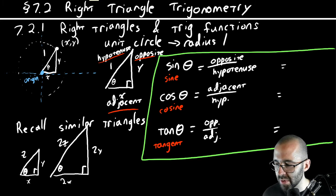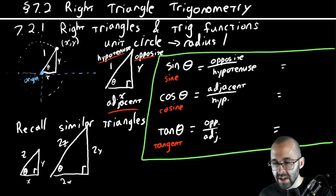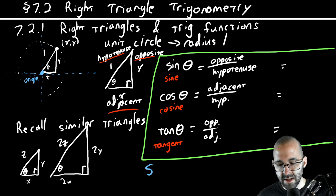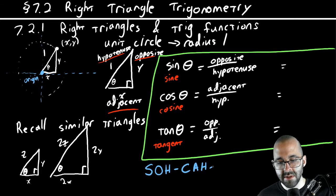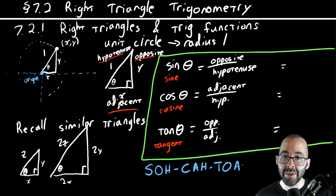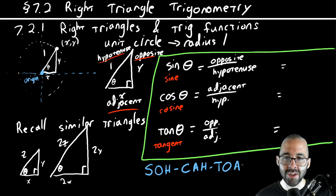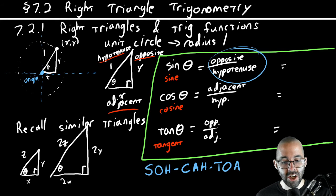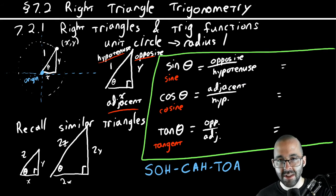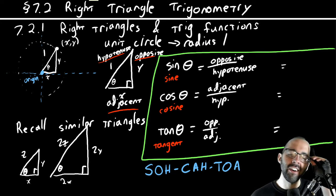If you have trouble remembering, there's a little mnemonic: sine is opposite over hypotenuse, cosine is adjacent over hypotenuse, tangent is opposite over adjacent. You've probably heard it before — SOH-CAH-TOA. We're going to be saying SOH-CAH-TOA a lot. If you ever forget what ratio is what trig function, SOH-CAH-TOA will get you there.